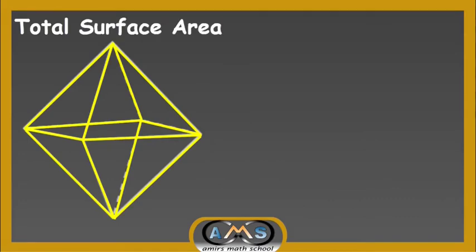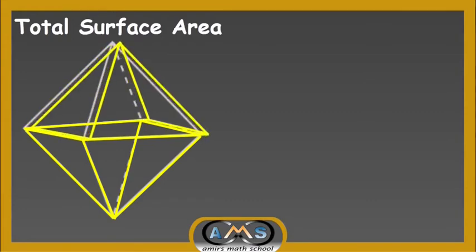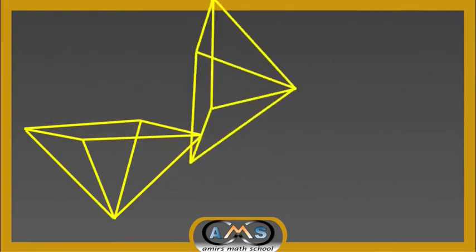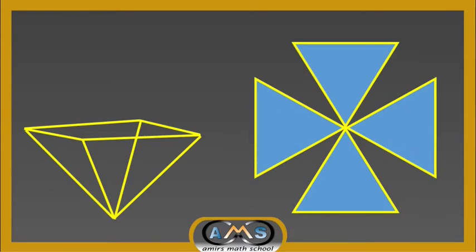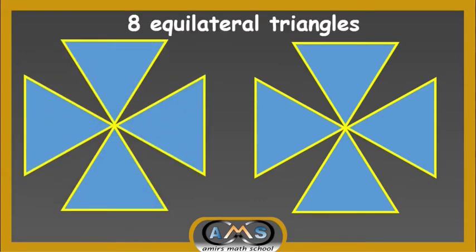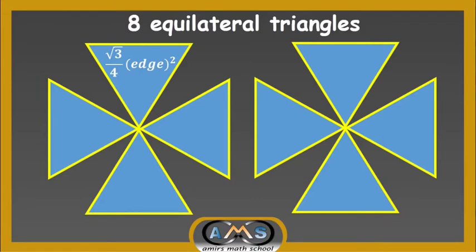Now let's find the total surface area of a regular octahedron. One octahedron can be split into 2 equal pyramids with a square base. Each pyramid consists of 4 equilateral triangles. So the total surface area will be the total area of 8 such equilateral triangles. We know the area of each equilateral triangle is (√3/4) × edge². Because all lengths are equal for a regular octahedron, we call this length the edge, and these 3 equal edges make an equilateral triangle. That's why the area of each equilateral triangle is (√3/4) × edge².